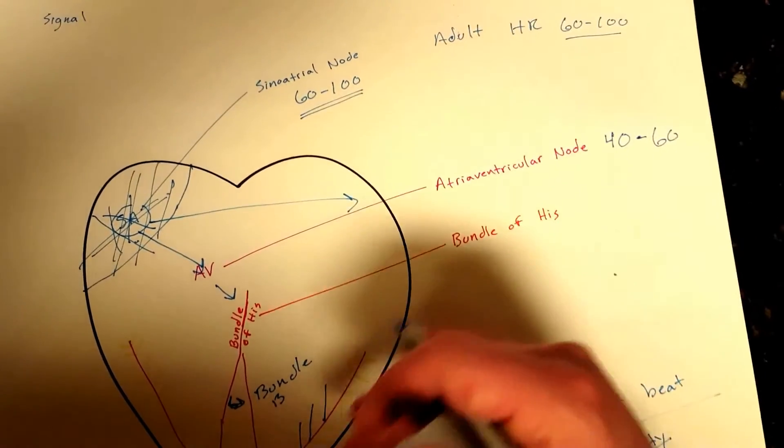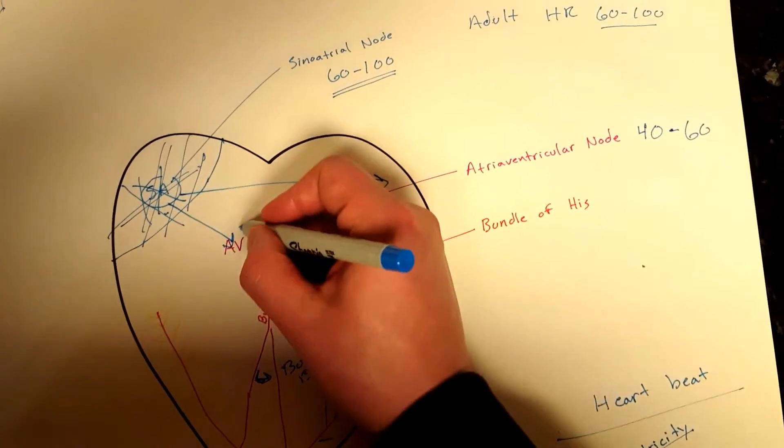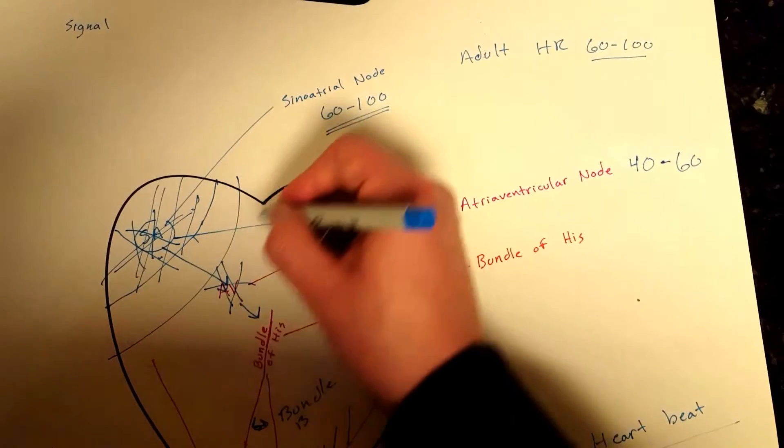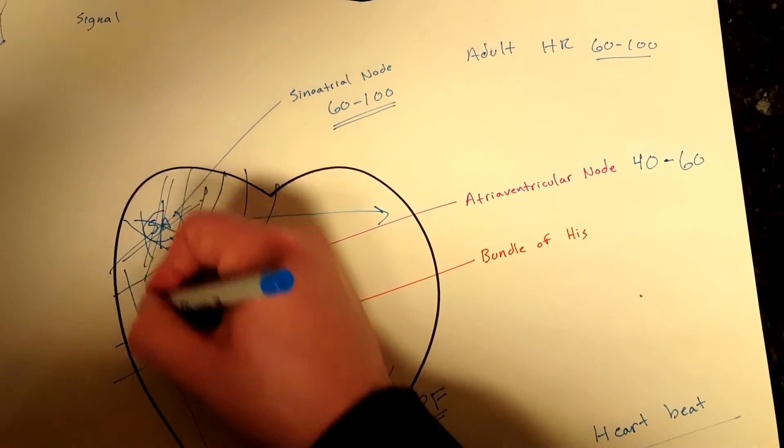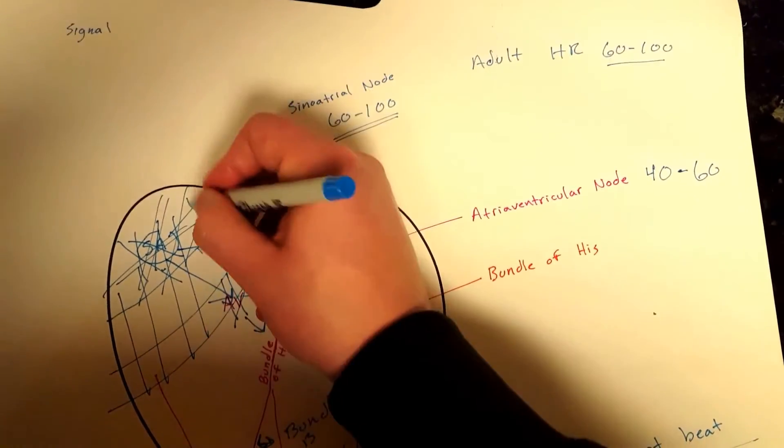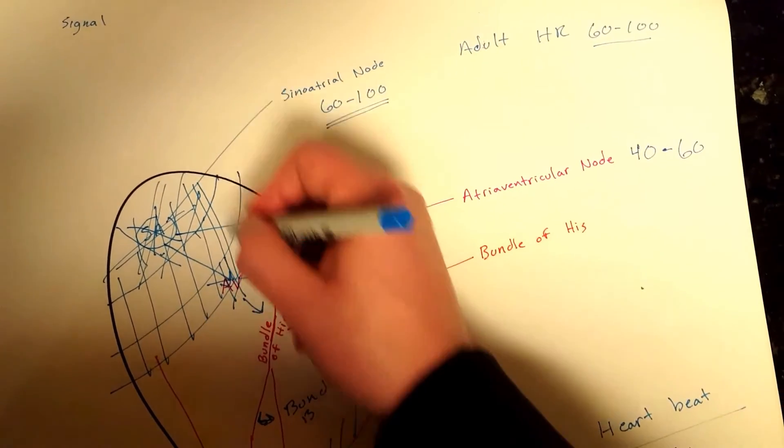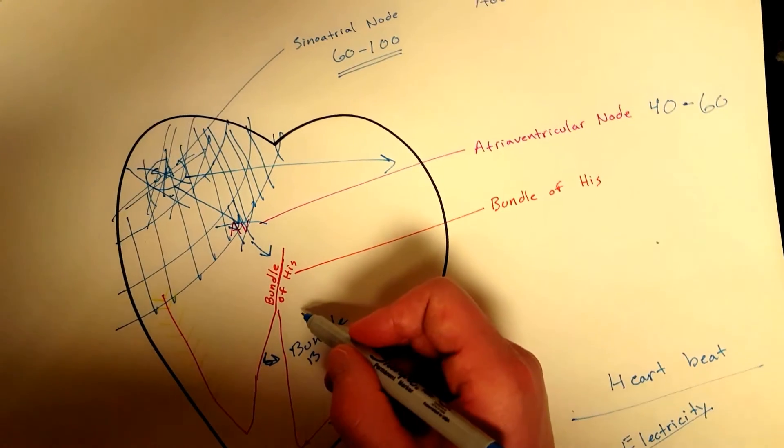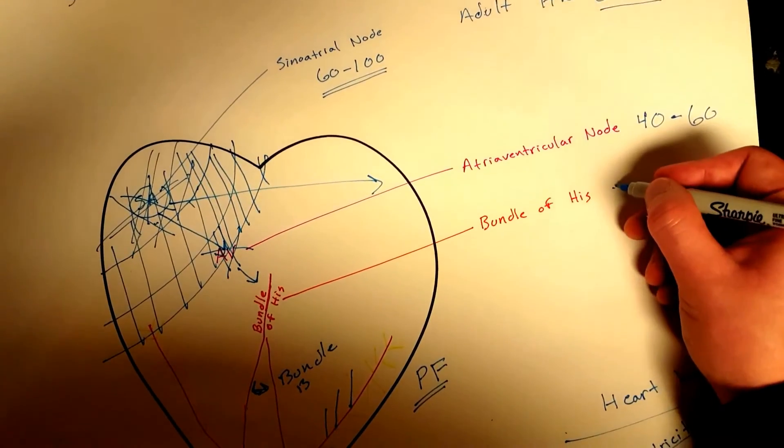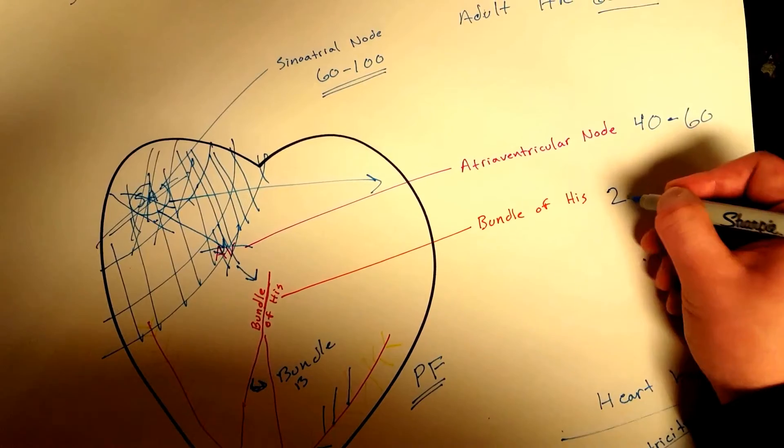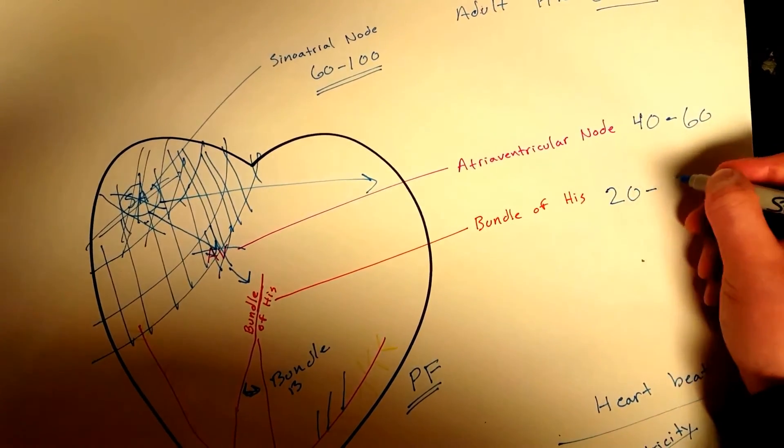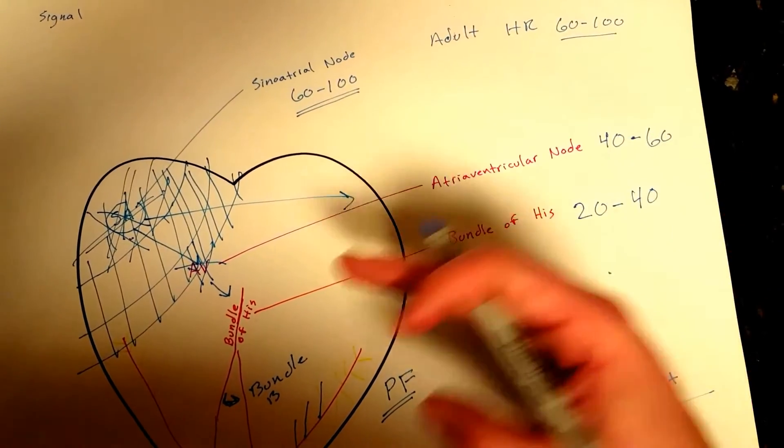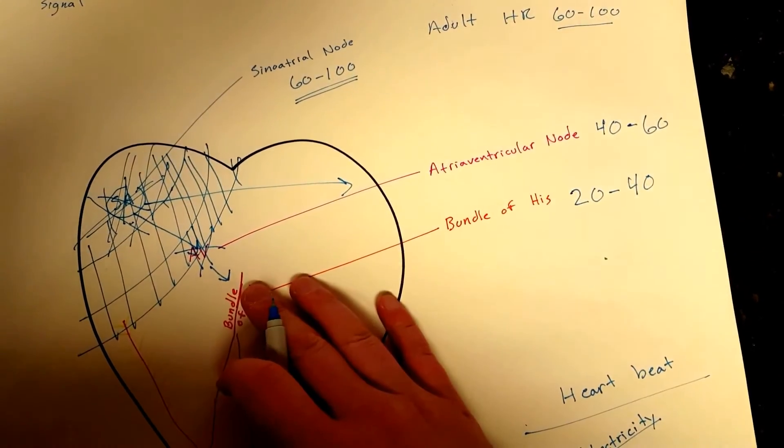Now let's say that this is not working. The tissue death keeps on coming down here because this big part of the heart is not getting O2 and it's consistently just starting to die off. Well, your bundle of His will then take over, and the bundle of His, its default signal per minute is between 20 to 40 signals of electricity per minute.